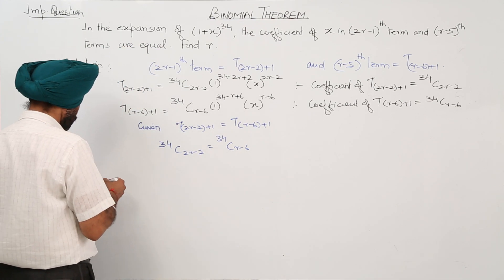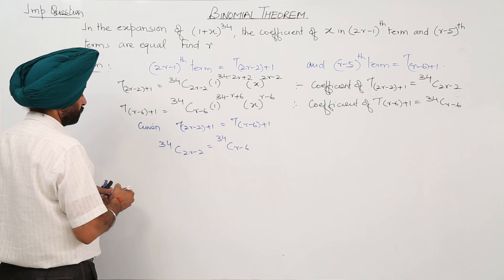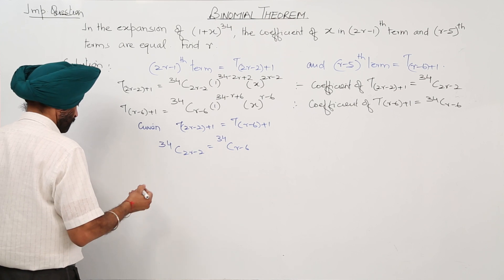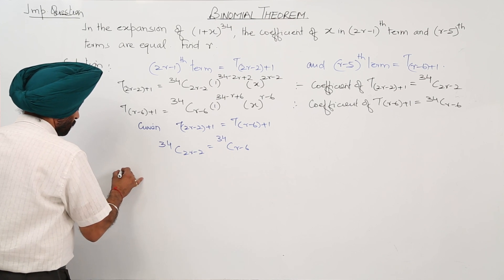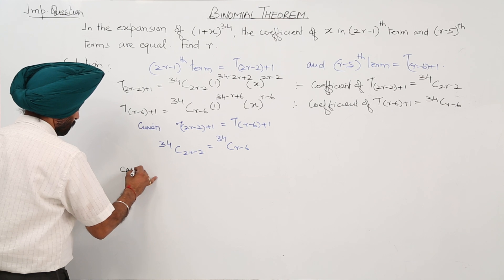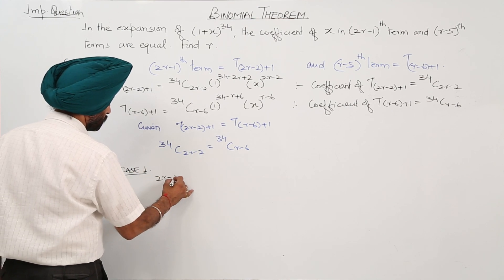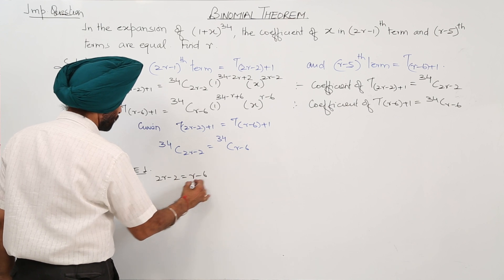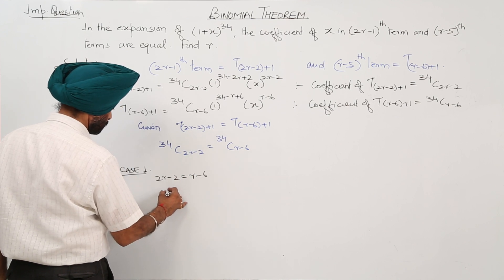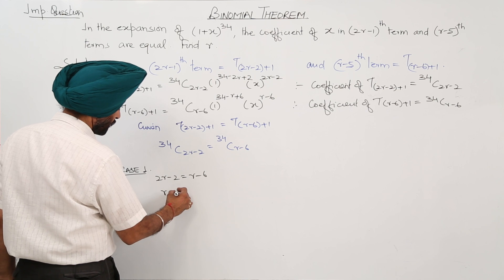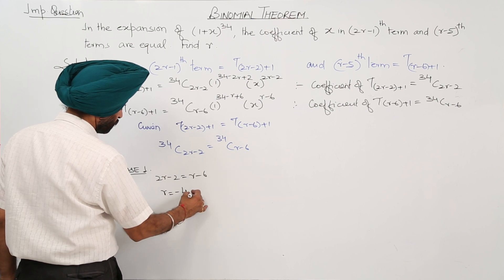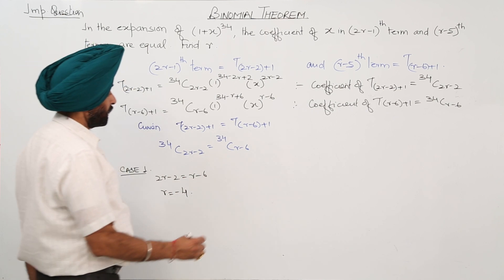Case 1: 2r-2 equals r-6, giving r equals -4.